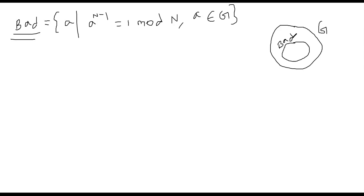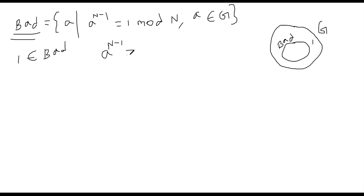How do we prove the set bad is a subgroup of G? First we need to prove identity exists. Clearly the number 1, which belongs to G, satisfies this property because 1^(n-1) is 1, therefore 1 belongs to bad. For closeness, we select two elements a and b from bad. That means a^(n-1) ≡ 1 mod n and b^(n-1) ≡ 1 mod n.